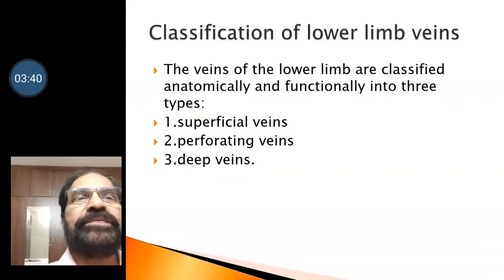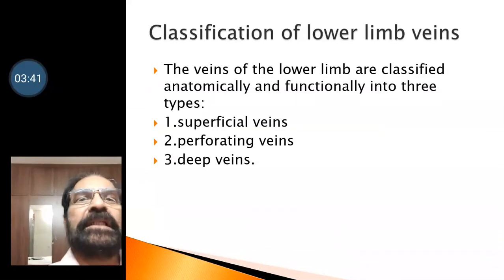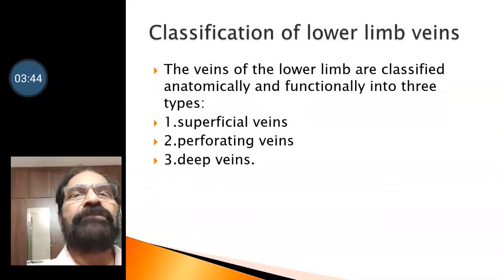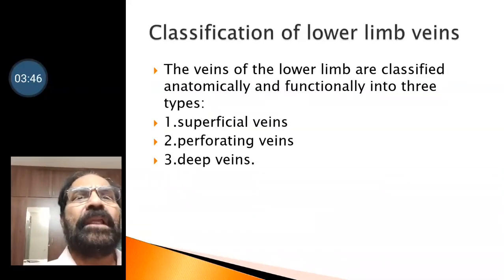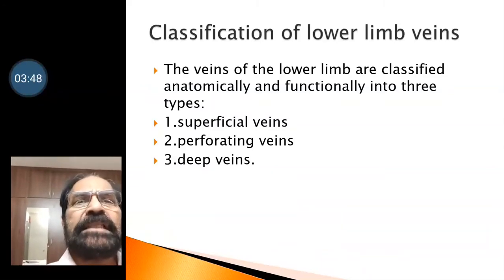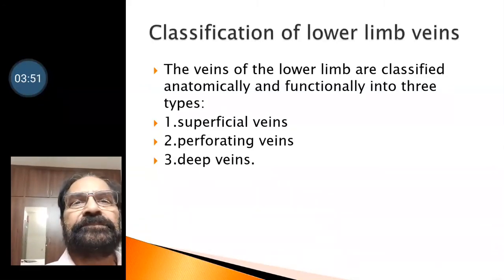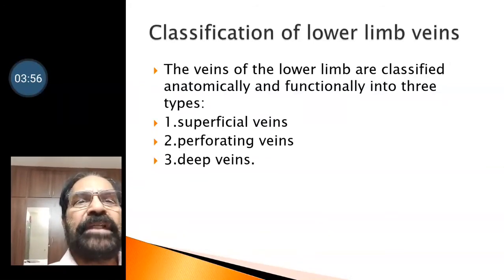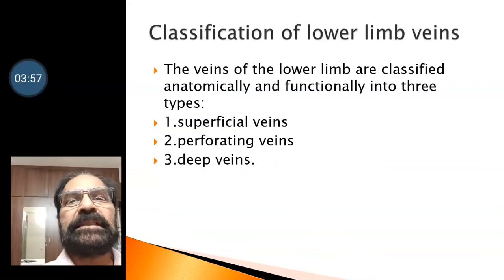Classification of the lower limb veins: the veins of the lower limb are classified anatomically and functionally into three types. They are superficial veins, perforating veins, and deep veins.